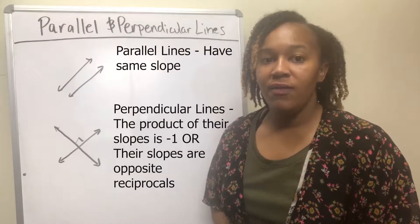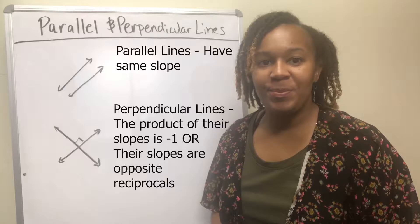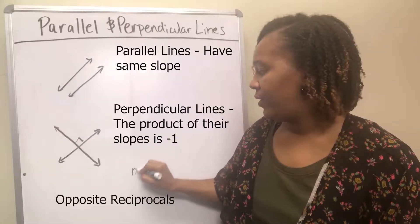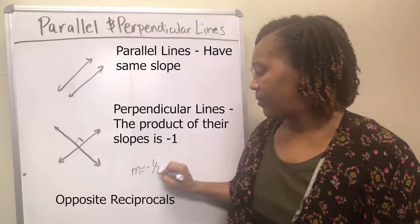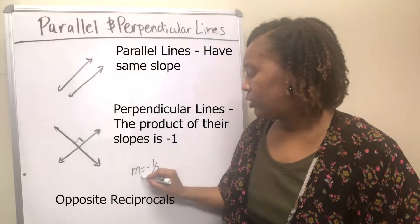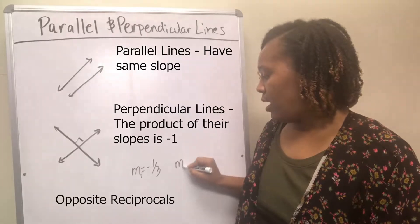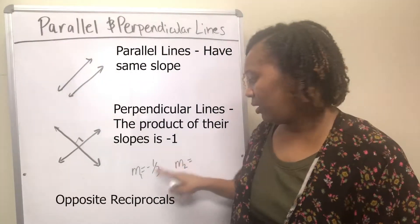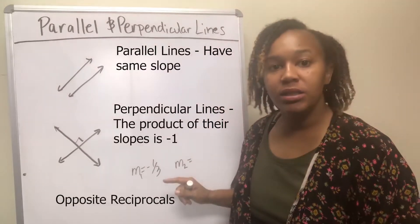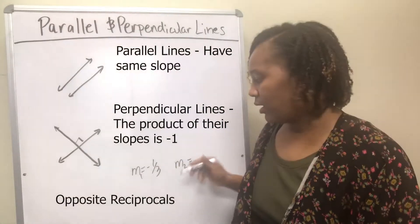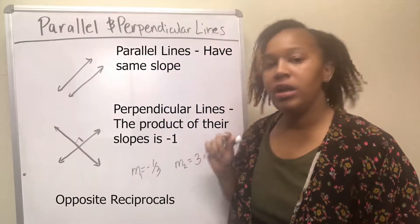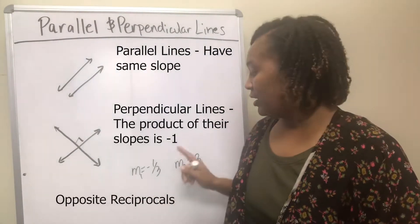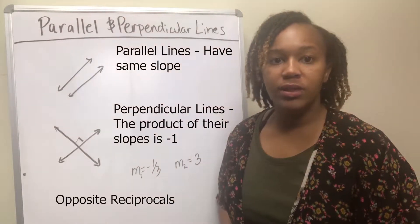For example, if one of the lines had a slope of negative one third — that's M1 — then a line perpendicular to it would be the opposite sign, so it would be positive, and then it would be the reciprocal. So that would be positive three, because if you take one over three and flip it, it becomes three over one, which is three. That's what it means to be opposite reciprocals of each other.